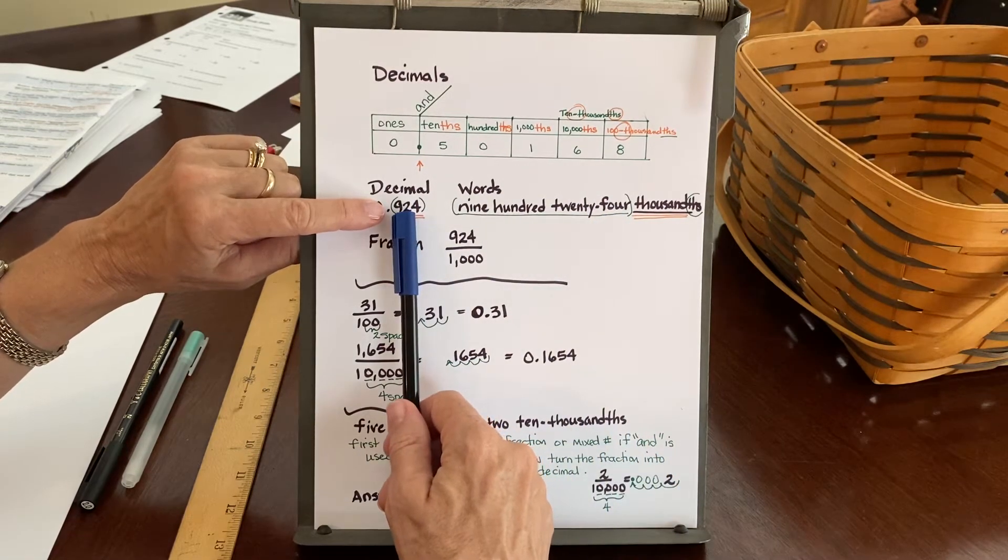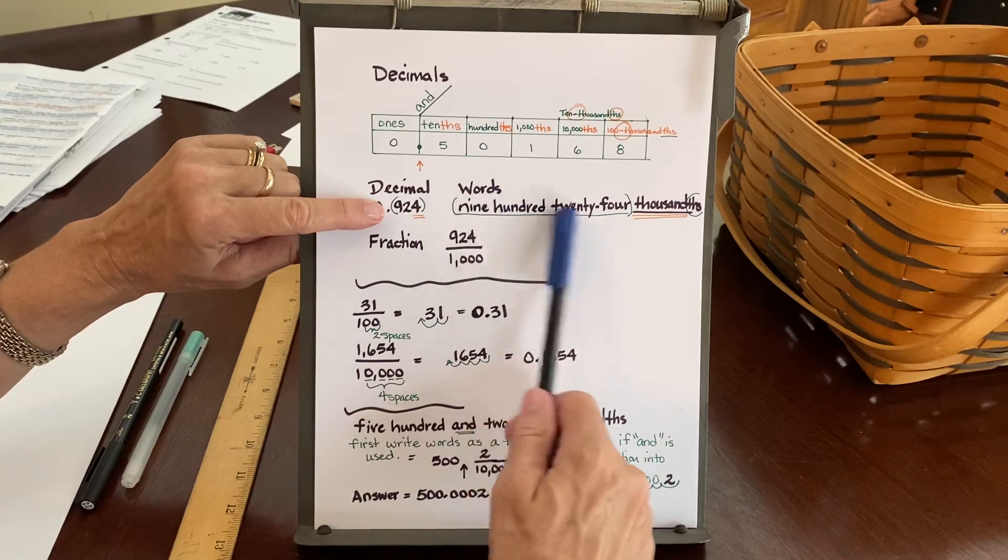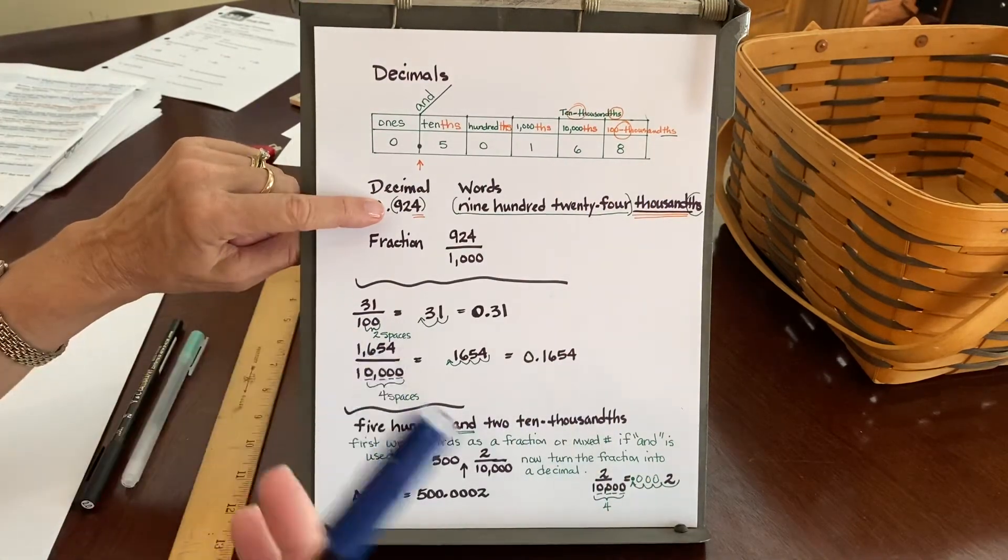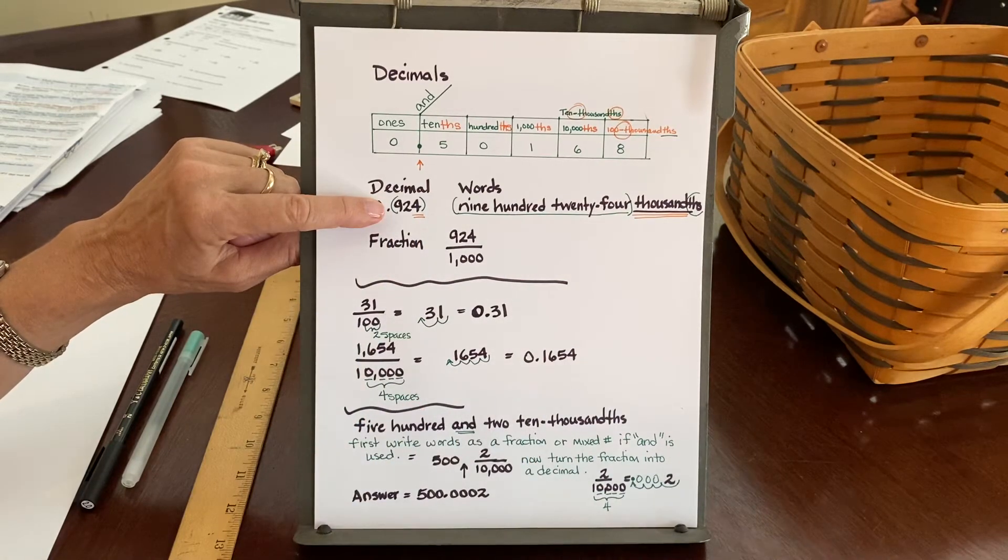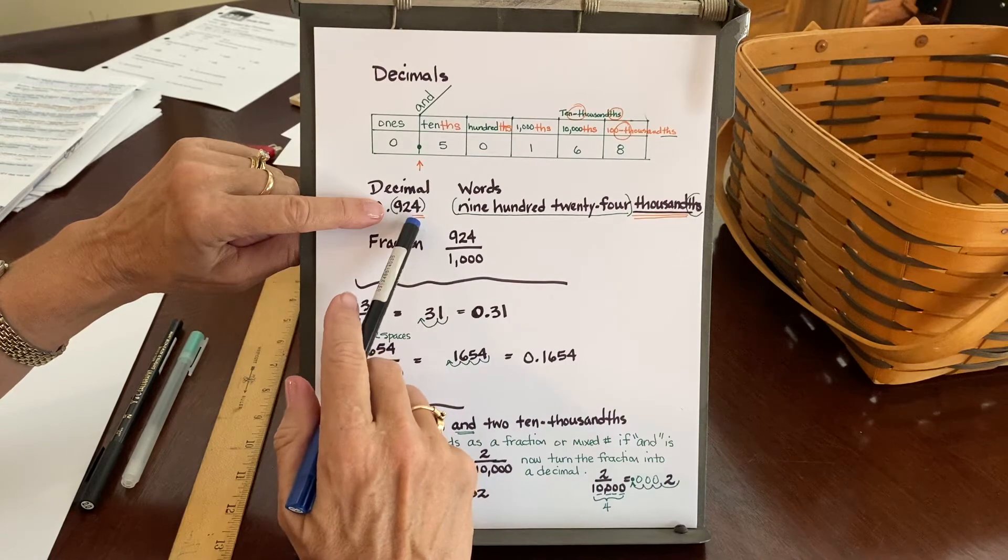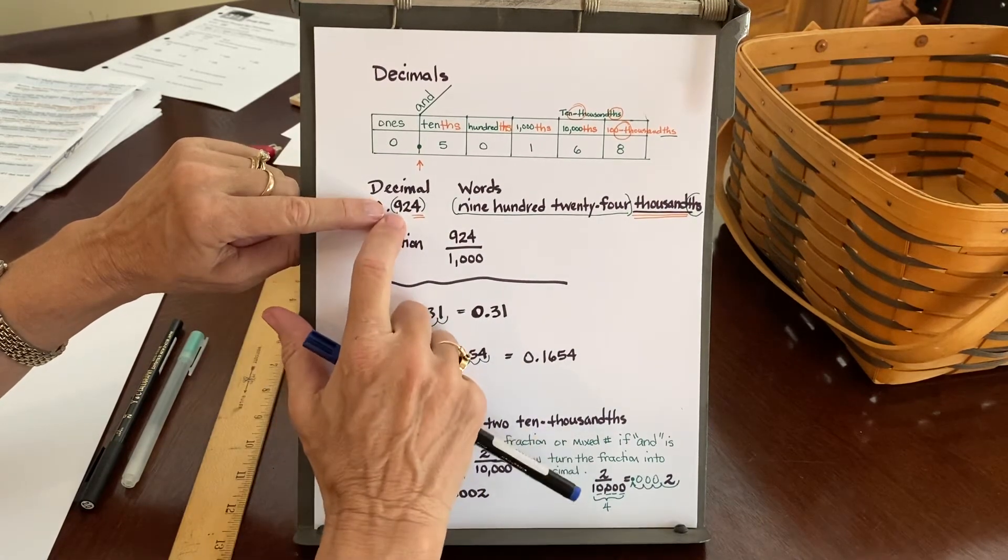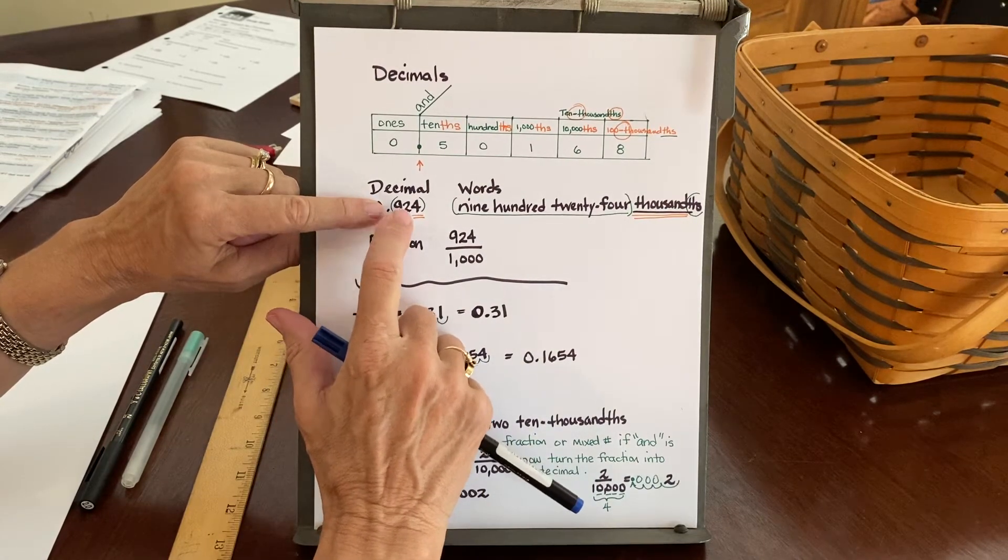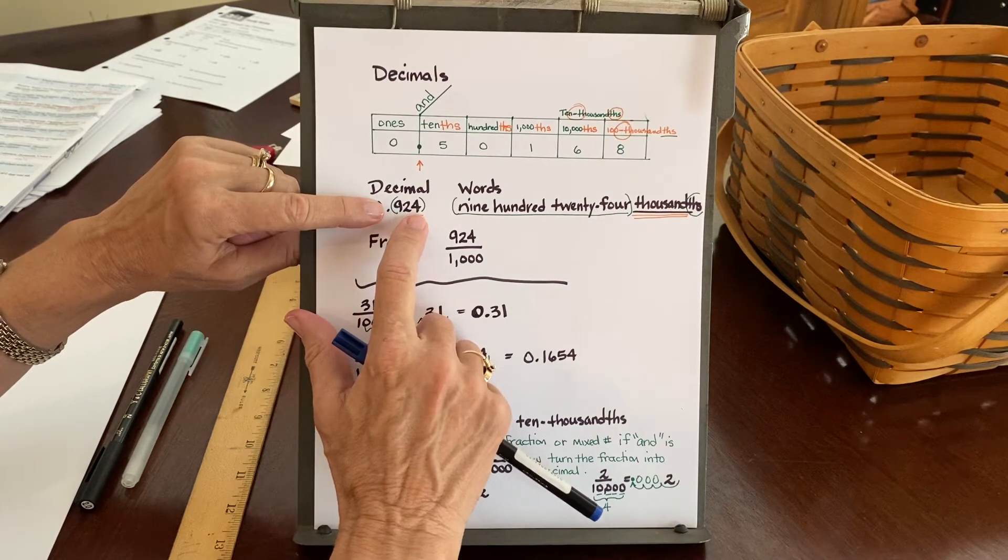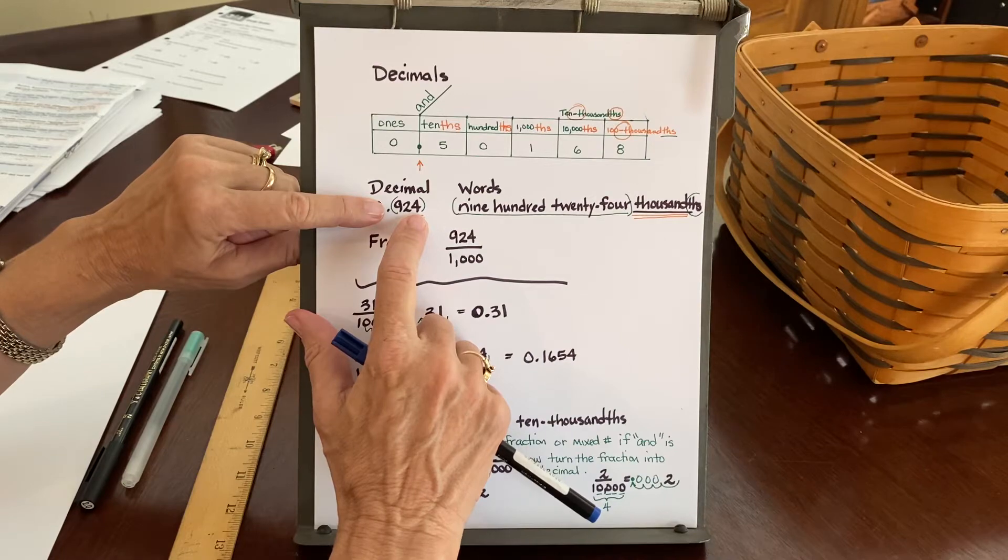But now we need to let us know that this is actually not 924 whole things. It's 924 pieces out of some amount. Well, we need to figure out what place is the four sitting in. Well, the 9 is sitting in the tenths. The 2 is sitting in the hundredths. And therefore, the 4 is sitting in the thousandths.